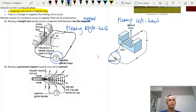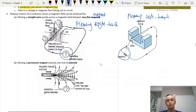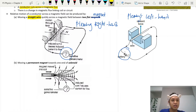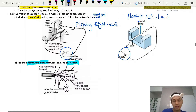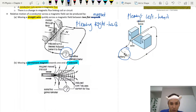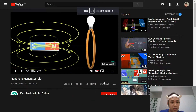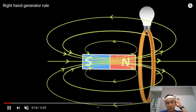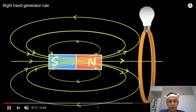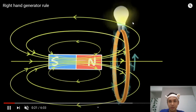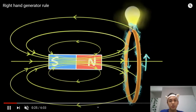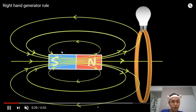For induced current, there are two types of setup. One is a straight wire cutting across the magnetic field. The other is a solenoid — coils of wire with the magnet moving in and out. Looking at the simulation, when the magnet moves in and out, you produce current — that's why the light bulb lights up. This is the basic idea of induced current: take a conductor, move it through the magnetic field, and as long as you cut, you produce electrical current.